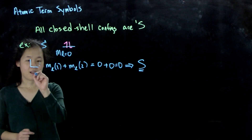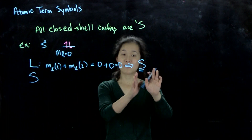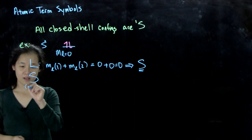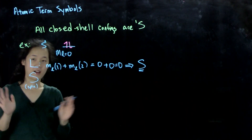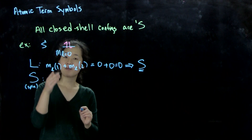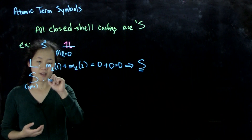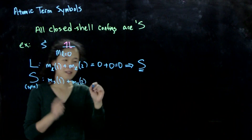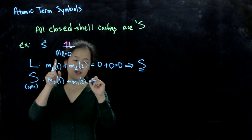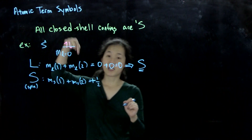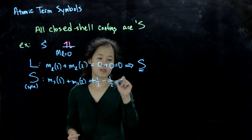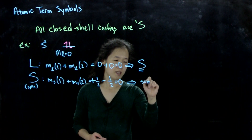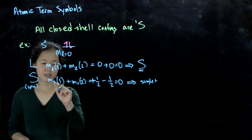Then we think about spin. This is S for the term (total angular momentum) and S for spin — don't get confused. We look at m_S of electron 1 plus m_S of electron 2, which equals plus one-half plus minus one-half, and this is also equal to 0. Therefore it's a singlet. So our term is singlet S.